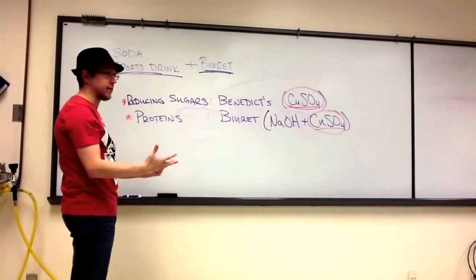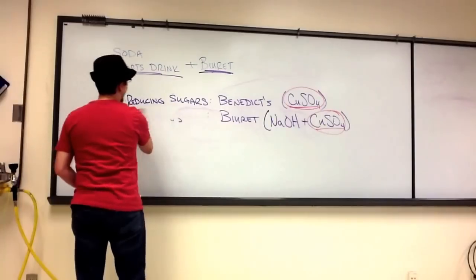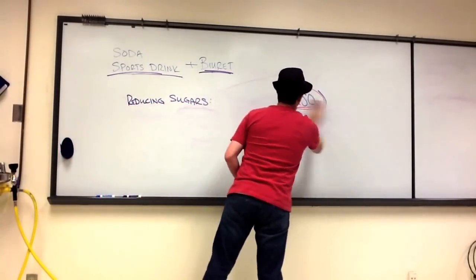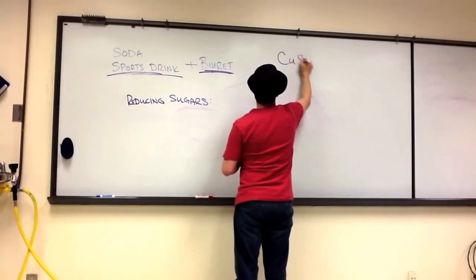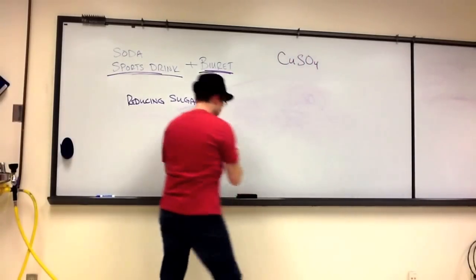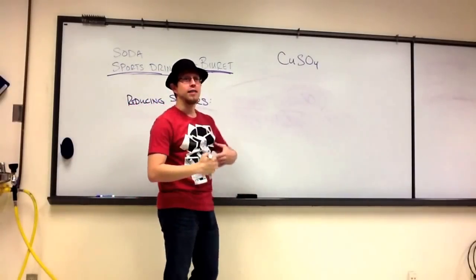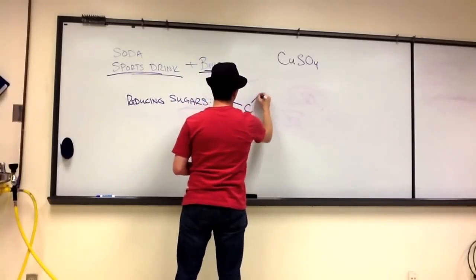Now, what is it reacting with? Let's think about what classifies something as a reducing sugar. We know, first off, that we're potentially looking at the reaction of copper sulfate with something. Well, reducing sugars are sugars, typically mono and sometimes disaccharides, that have a free carbonyl group.